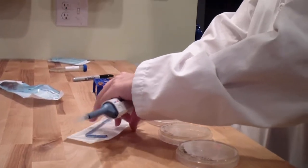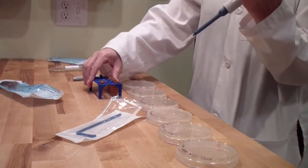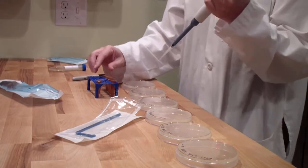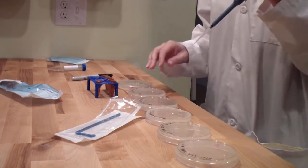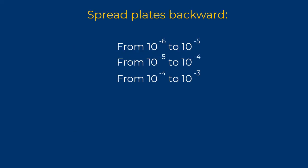Once you have completed the serial dilution, you are ready to transfer the liquid to the matching plates. From now, you will work starting from the most dilute, which is the ten to the negative six, backward to the least dilute, which is ten to the negative one. That way you can use the same tip and spreader as you work.